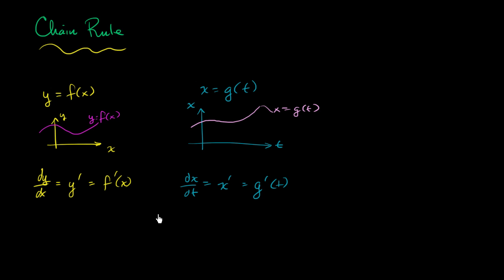Now, what the chain rule is all about is when we take the composite. If we want to find y is a function of x, x is a function of t, so we could write y equals f of, instead of saying x, we could express y as a function of t.